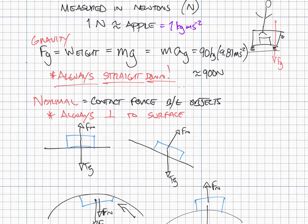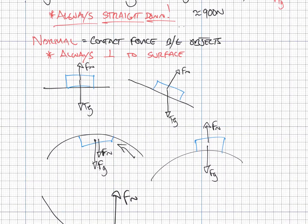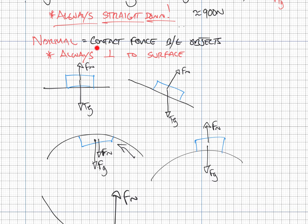The other common force is the normal force, a contact force between objects that always acts perpendicular to a surface. If an object is sitting on a flat surface, the normal force pushes up. On a ramp, the normal force pushes perpendicular to the surface at an angle.